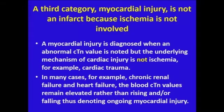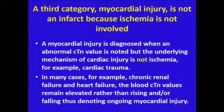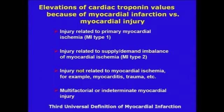The third category is non-ischemic myocardial injury, which is diagnosed when an abnormal troponin value is noted but the underlying mechanism of cardiac injury is not ischemia — for example, cardiac trauma. In many cases, such as chronic renal failure and heart failure, blood troponin values remain elevated with no delta. The rising and falling pattern does not occur as it does in patients with an acute ischemic injury.